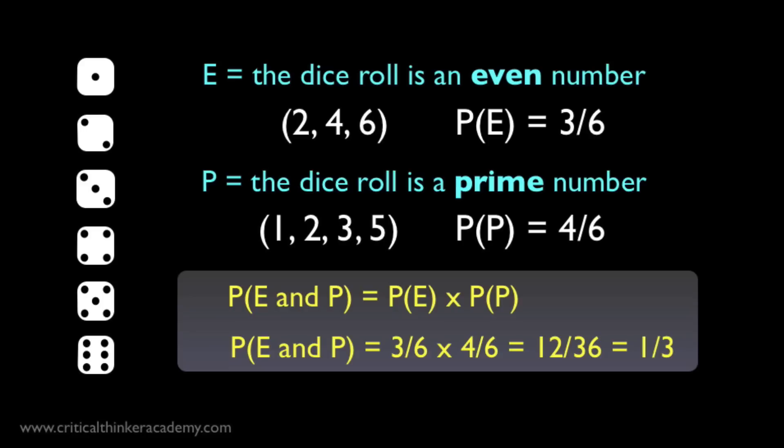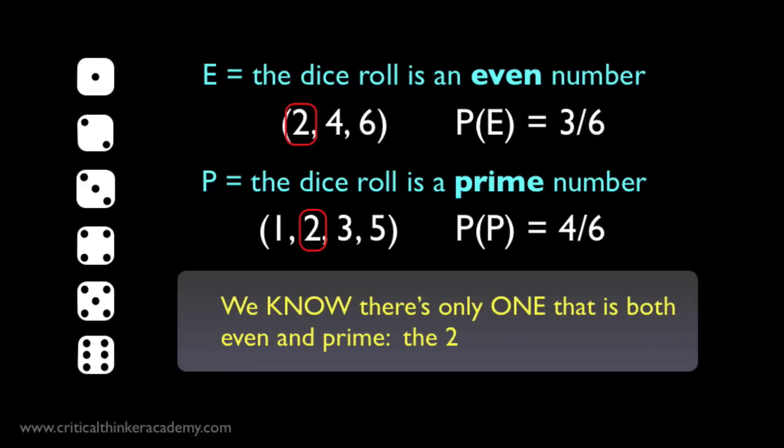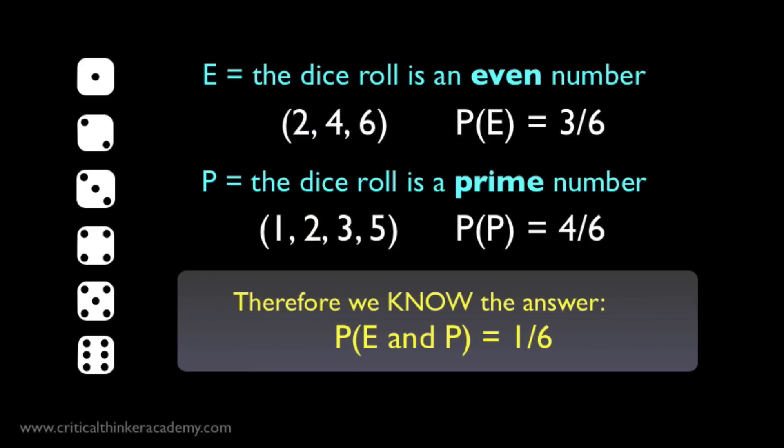So according to this calculation, on any given dice roll there's a 1 in 3 chance of getting a roll that is both even and prime. But we know this answer can't be right. How do we know this? Because by inspection, we know that there's only one possible dice roll that is both even and prime — it's the 2. If there's only one possible dice roll that is both even and prime, the answer has to be 1 in 6. But the restricted rule gives us 1 third, or 2 in 6. It overestimates the probability.